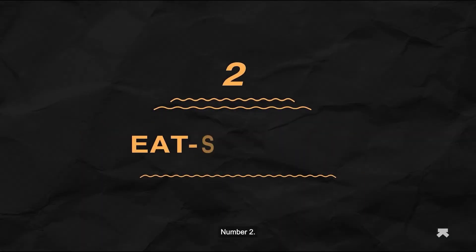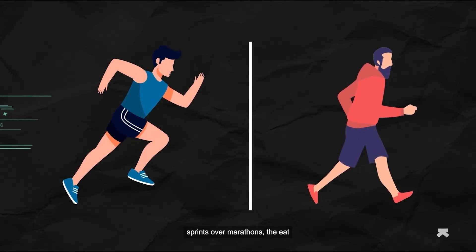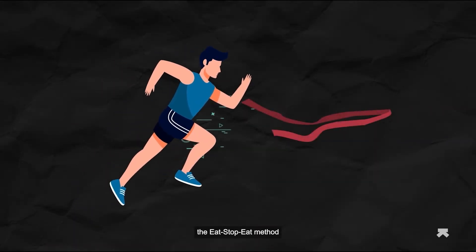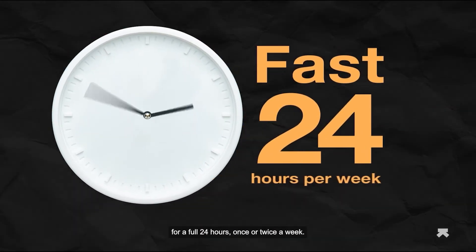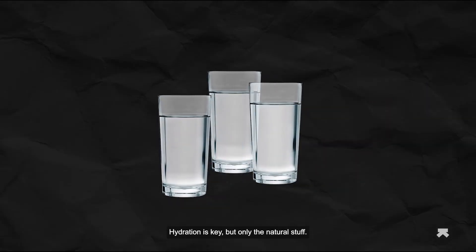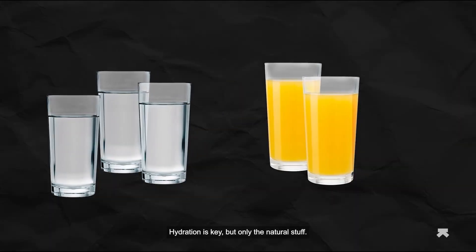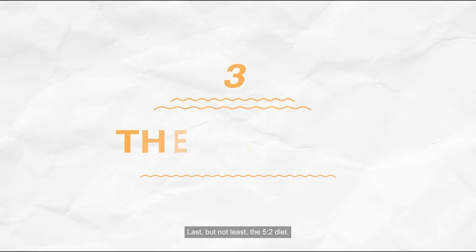Number two: Eat-Stop-Eat. If you're the kind of person who likes sprints over marathons, the Eat-Stop-Eat method might work for you. All you have to do is fast for a full 24 hours once or twice a week. Hydration is key, but only the natural stuff - nothing artificially sweetened.